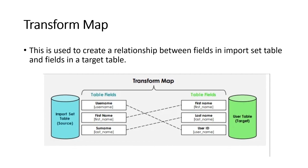This picture from ServiceNow documents shows the transform map. The import set table fields might include username, first name, and surname. The target table has fields like first name, last name, and user ID. You can see that 'username' in the import set table is mapped to the 'user ID' field — the name may be different in the Excel, but you specify which target table field it should go to.